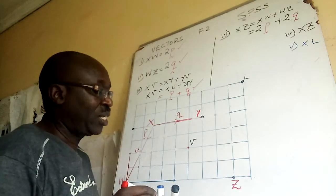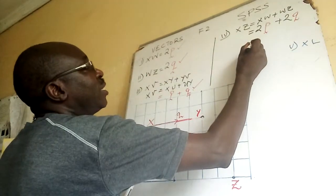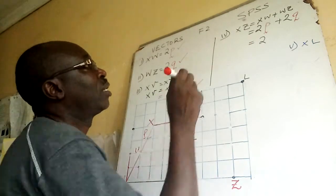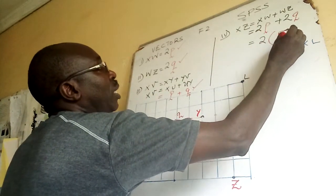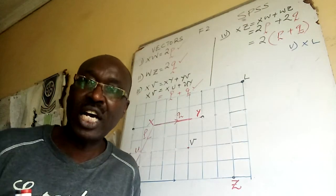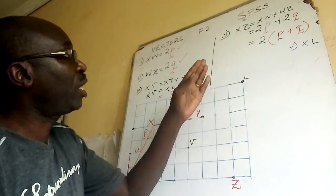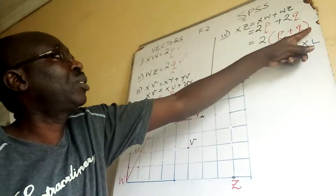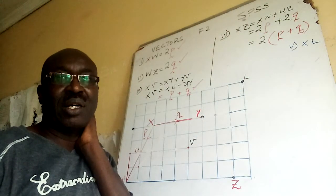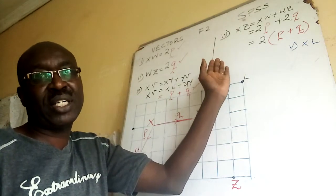Now, look at this. What can I do now? I can write 2 in bracket P plus Q. What did we call that? Factorization. Do not put your number on the right-hand side — no. It's a movement, so the scalar must be on the left-hand side.